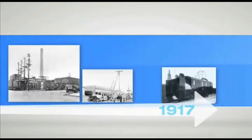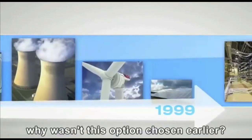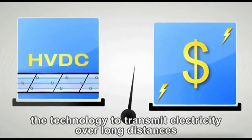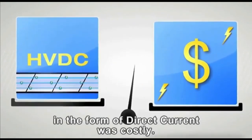So the good question is, why wasn't this option chosen earlier? The answer is simply because the technology to transmit electricity over long distances in the form of direct current was costly.